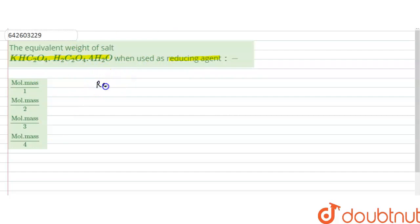So the reducing agents are those which reduce other species or compounds and itself get oxidized. It means the reducing agents are those compounds which itself get oxidized and reduce the other compounds.